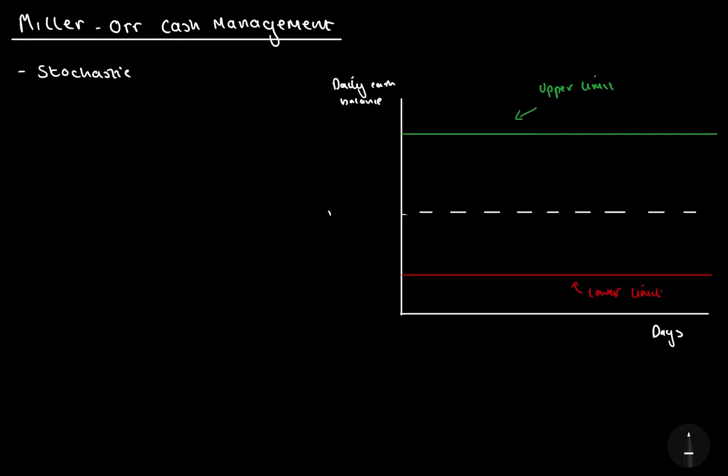Now that we've got both of those in, this middle bit is called our return point. So this is the optimum cash balance, the cash balance which we want to be kept, really. But ideally, it's always going to be kept between the upper limit and lower limit. So I'll explain what happens.